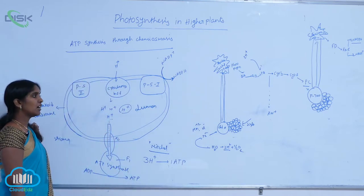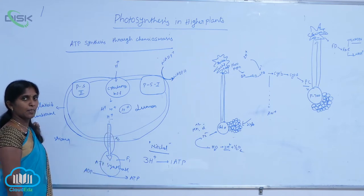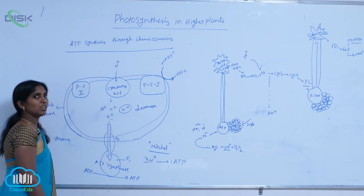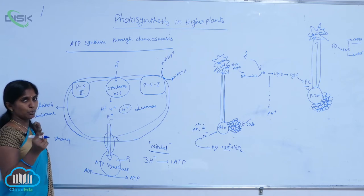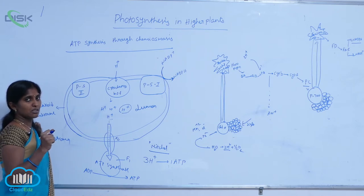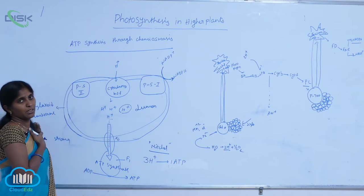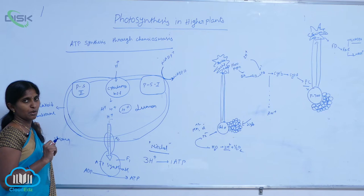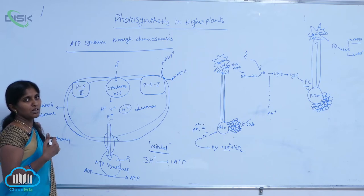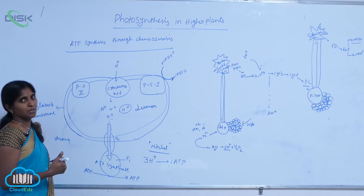The number of protons is based on the number of water molecules split. If two water molecules are split, four protons are accumulated inside the lumen. For four protons, one ATP is formed. So based on the number of protons accumulated, the number of ATPs formed depends accordingly.